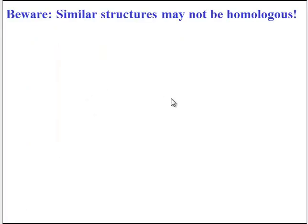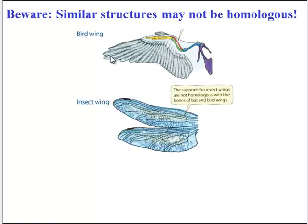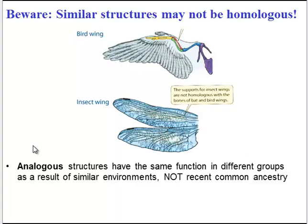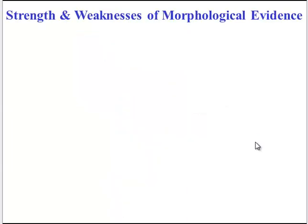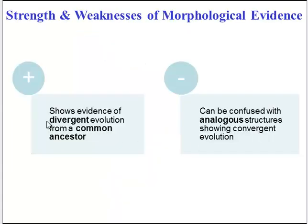One warning to keep in mind with morphology: structures may look similar but may not be homologous. For example, the wing of a bird and the wing of an insect are both used to fly, but their underlying structure is not similar and they were not inherited from a recent common ancestor. These are analogous structures — structures with the same function in different groups because those species evolved in similar environments, not from a recent common ancestor. Analogous structures show evidence of convergent evolution, as opposed to divergent evolution from a common ancestor. So while morphological evidence can show divergence, you have to be careful not to confuse homologous with analogous structures.